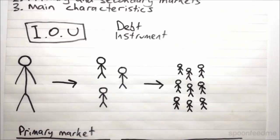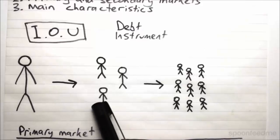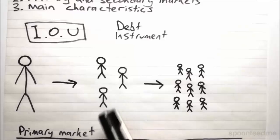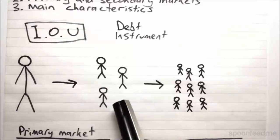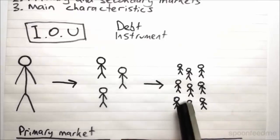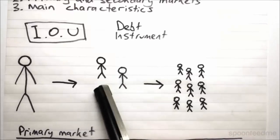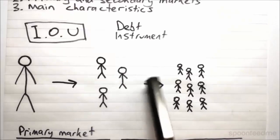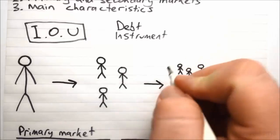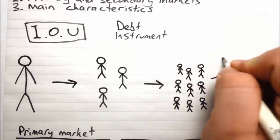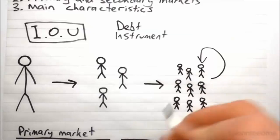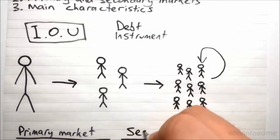What differentiates bonds from loans from say a bank is that after this initial sale in which the loan is initially made, the bond can actually then be resold from one investor to another, and then to another and to another and so on and so forth. And so it can just cycle around in what we call the secondary market.